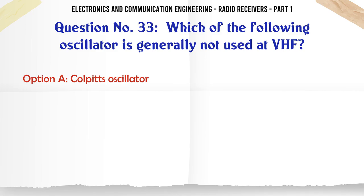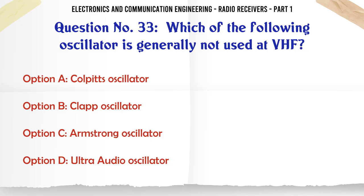Which of the following oscillators is generally not used at VHF? A. Colpitts oscillator. B. Clapp oscillator. C. Armstrong oscillator. D. Ultra-audio oscillator.